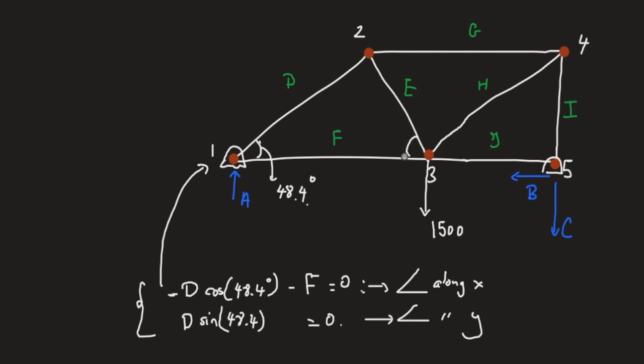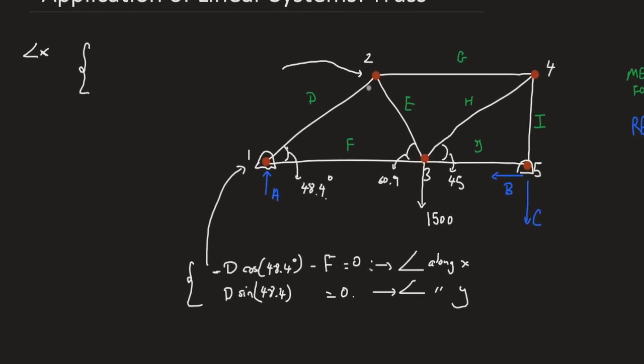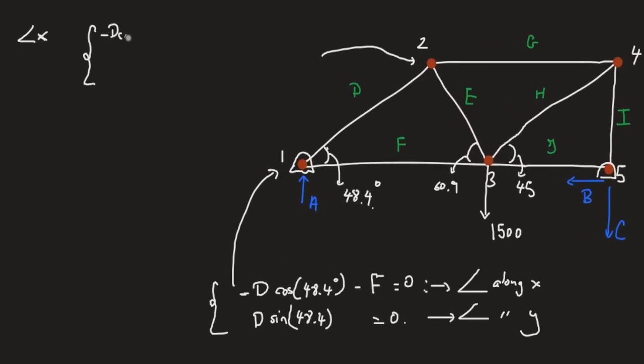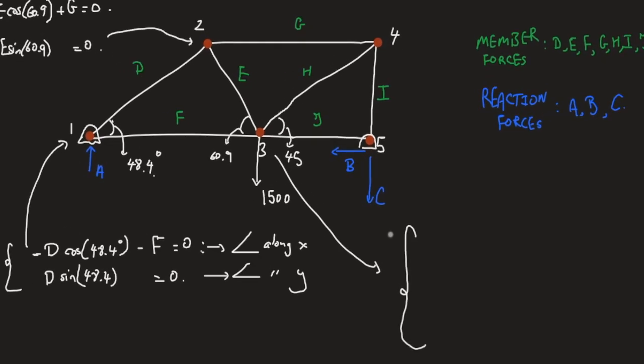Let's do the same thing for pin two. If I have an angle here of 60.9 and an angle here of 45, then we can fill in all the other angles. Let's apply projections onto pin two. If I project along the x-axis, I'm going to get minus D times cosine 48.4, a component from E with value 60.9, so E cosine 60.9, and G with cosine zero, that is only G. They add up to zero. Now project along y: minus D sine 48.4 minus E sine 60.9, and G sine zero which is zero, equal to zero.